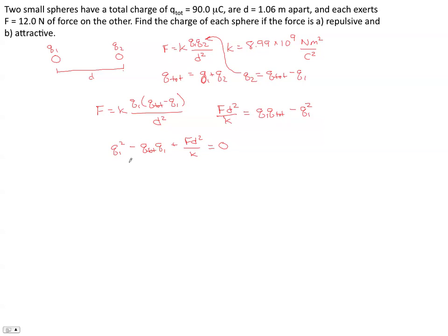What we have here is a quadratic equation. It's an equation of the form A x squared plus B x plus C equals zero, where in our particular case the thing that's playing the role of x is our unknown q1. A in our case is one, the coefficient in front of the q1 squared term. B is minus q total, don't forget the negative sign. C is F d squared over k.